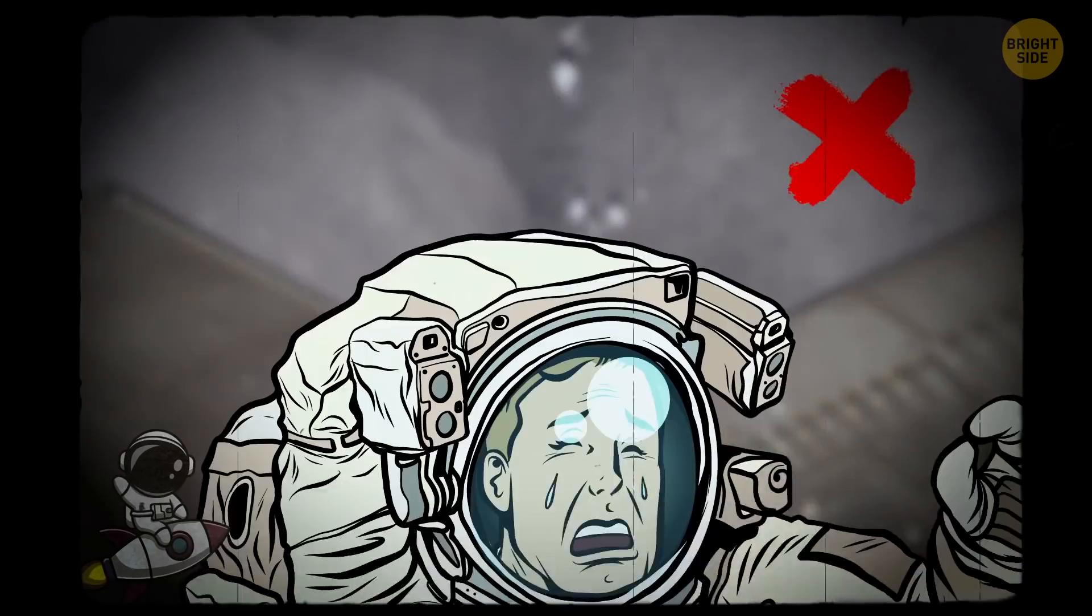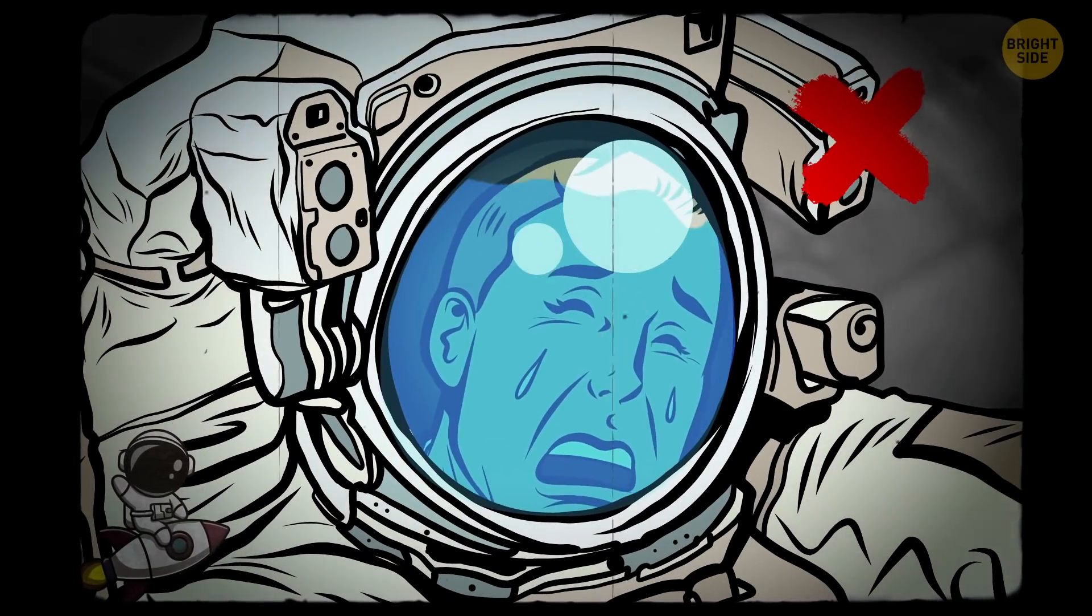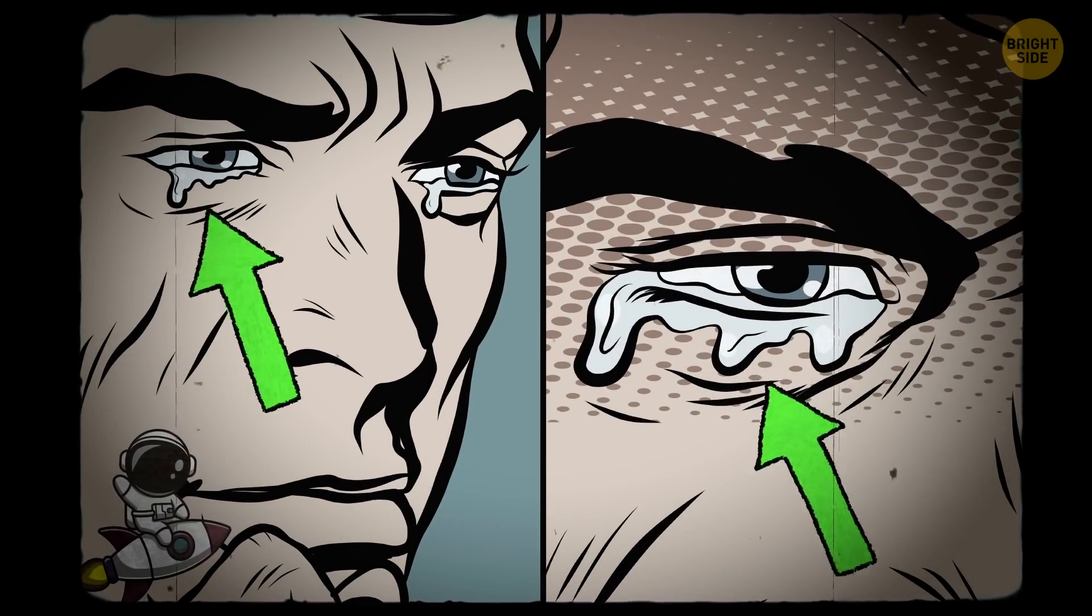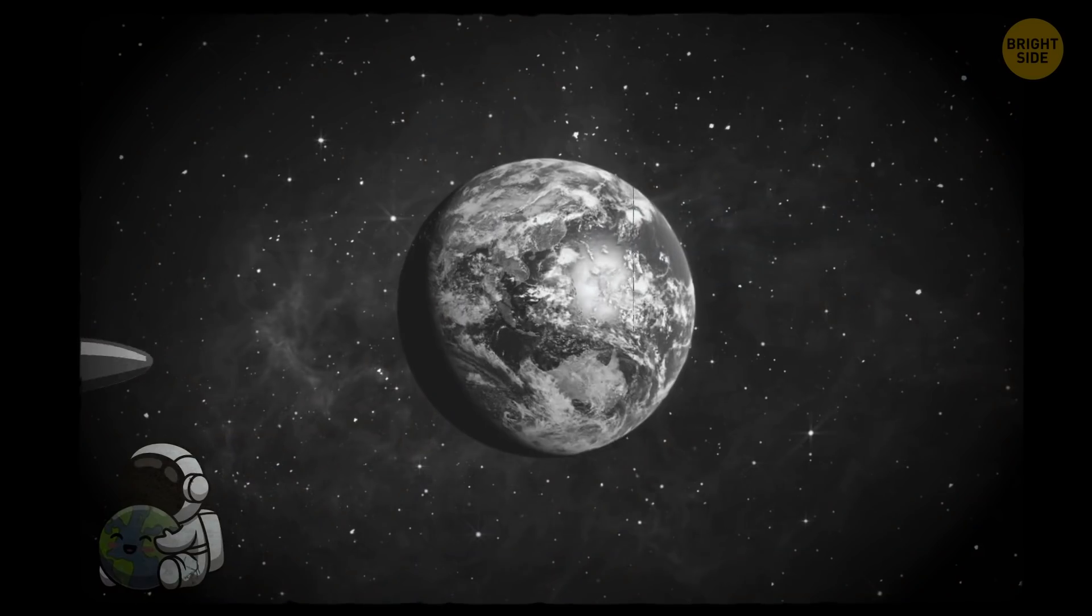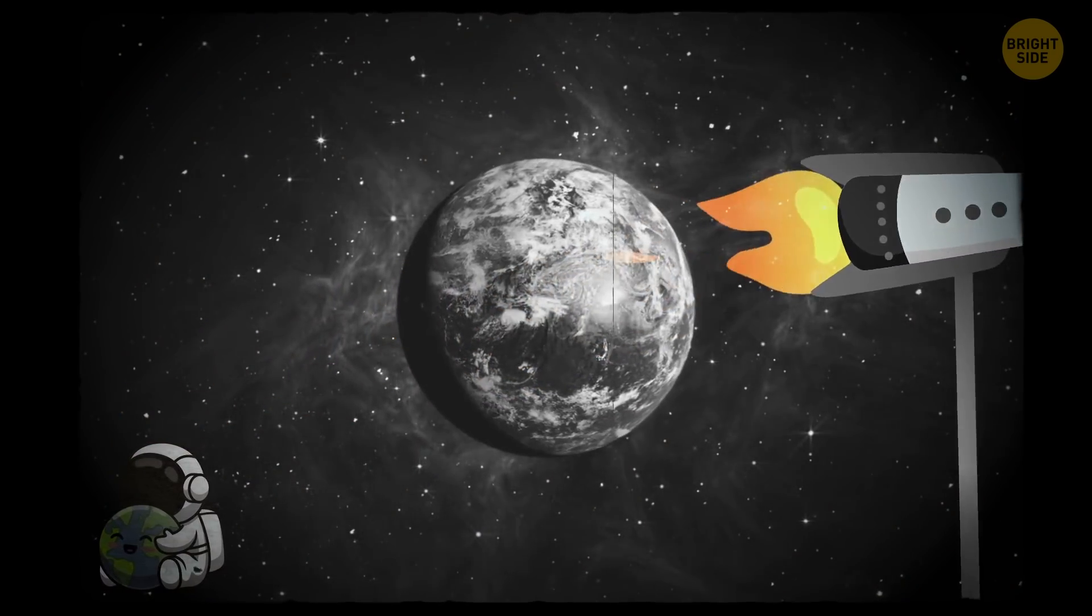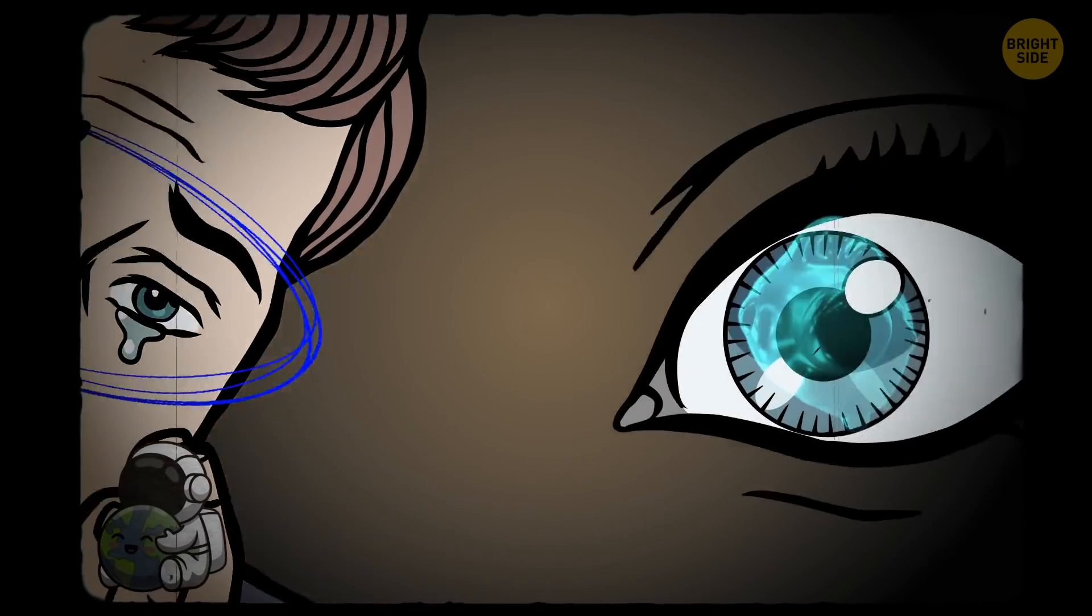It's not possible to cry in space, no matter how many heartbreaking soap operas you just watched. Even if you try really hard to weep, the tears just won't shed. They shed because of the gravity law, which works differently on a spaceship. Still, your lacrimal glands work as usual, so if you start crying, all the tears will accumulate right in your eyes.